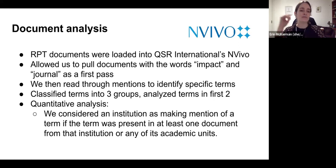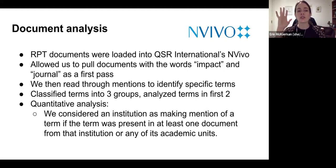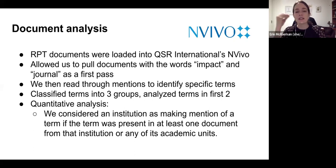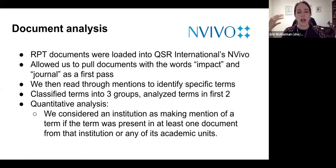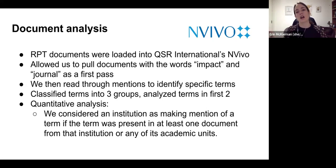In terms of the analysis, we did a quantitative and qualitative analysis for this study. We took those documents that we had collected and loaded them into QSR International's NVivo. It allowed us to quickly search those documents and pull out any that had mentions of the words 'impact' or 'journal.' We did that as a first pass to find that subset of documents, and then we read through a lot of those mentions. There's kind of no substitute for the human element — we really did need to read through the documents to get a sense of what terms they were using, and that allowed us to identify specific terms for further analysis.